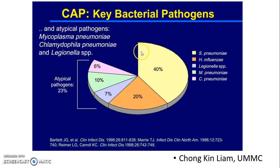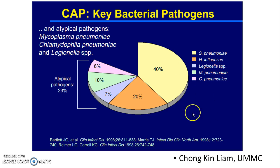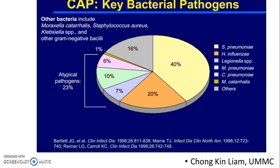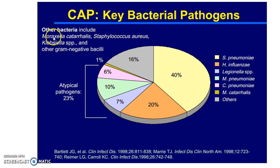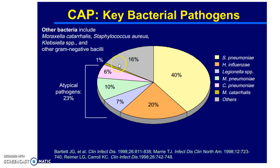Knowing these pathogens is important in helping us choose the most suitable antibiotic for treating pneumonia. The remaining causative organisms include Moraxella catarrhalis, Staphylococcus aureus, Klebsiella, and other gram-negative bacilli, contributing about 16% of pneumonia cases.